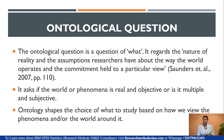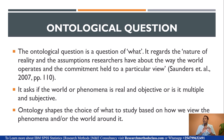Starting with the ontological question — the question of 'what' — it asks: Does social reality exist? What is the nature of reality and the assumptions researchers have about the way the world operates? In simple terms, we are talking about the world around the researcher. The ontological question asks whether the world of phenomena is real and objective, or multiple and subjective. Once the researcher is clear on the ontological question, this shapes the choice of what to study based on how the researcher views the phenomena or the world around them.